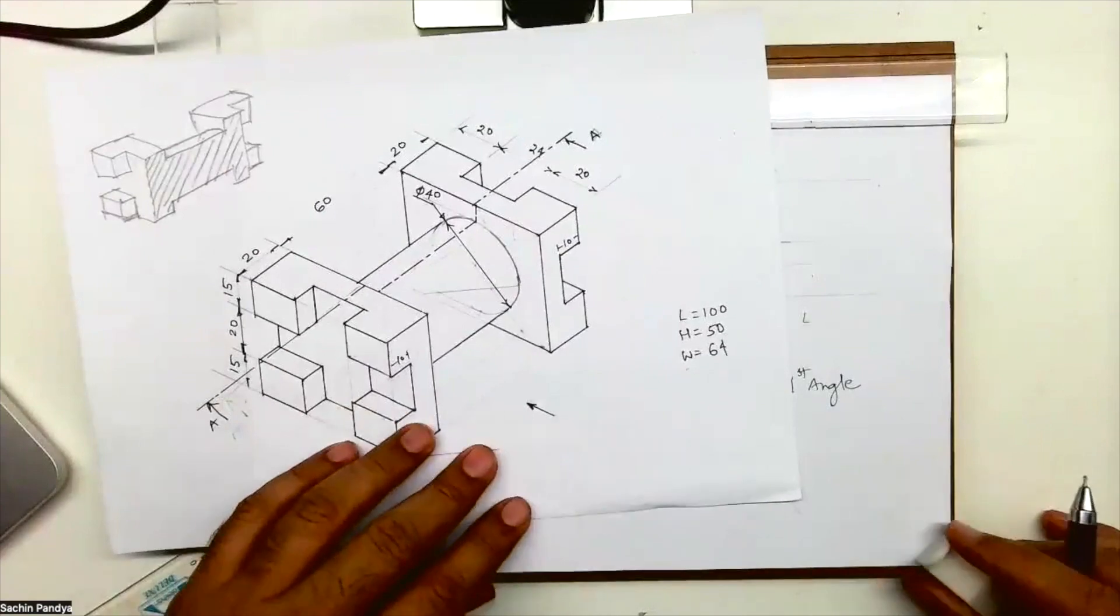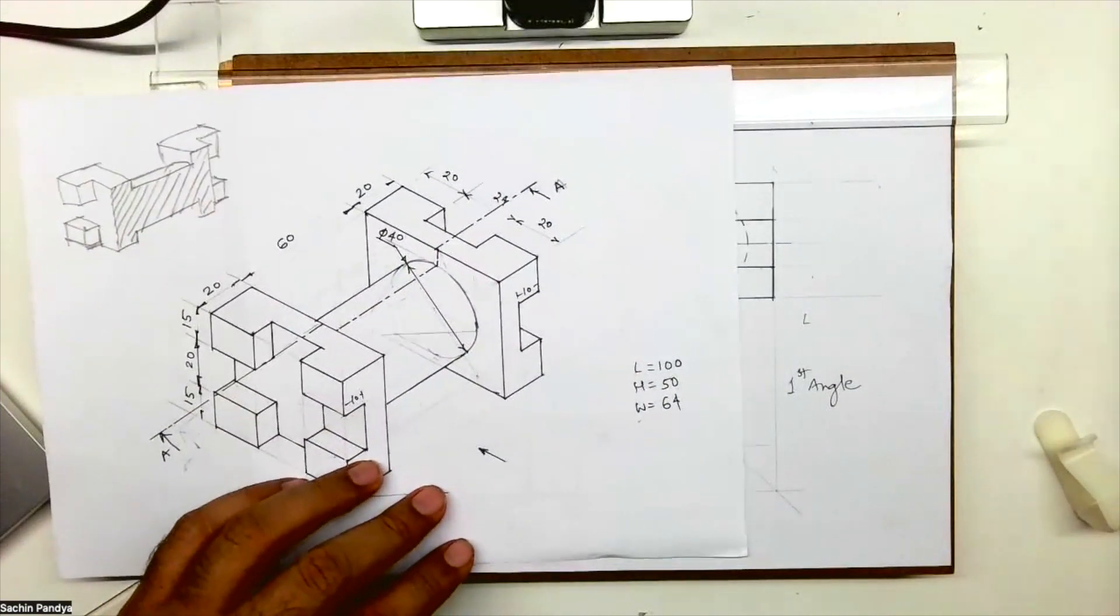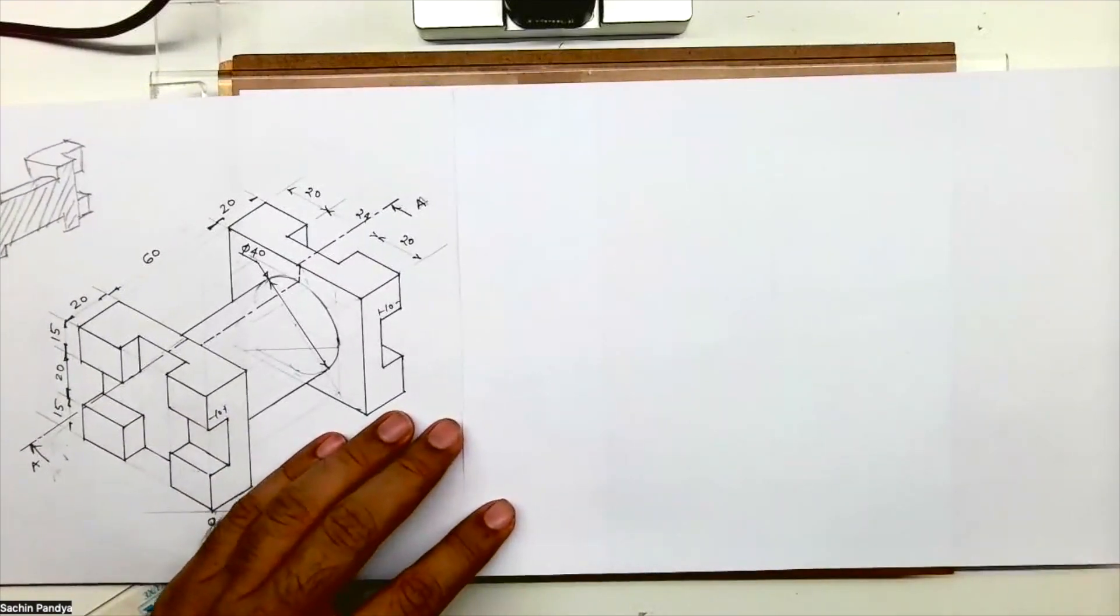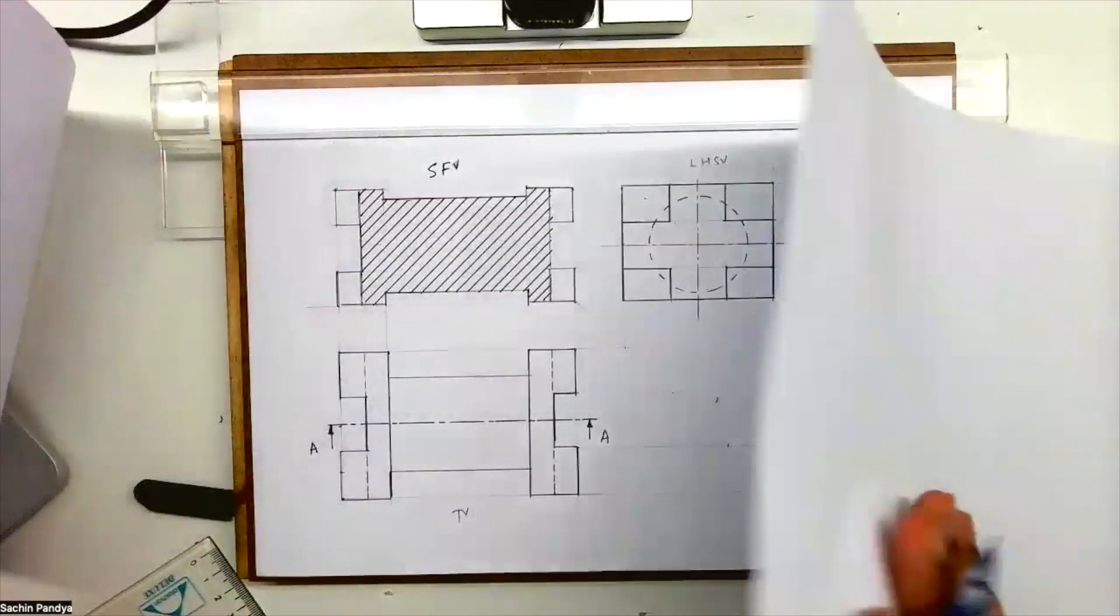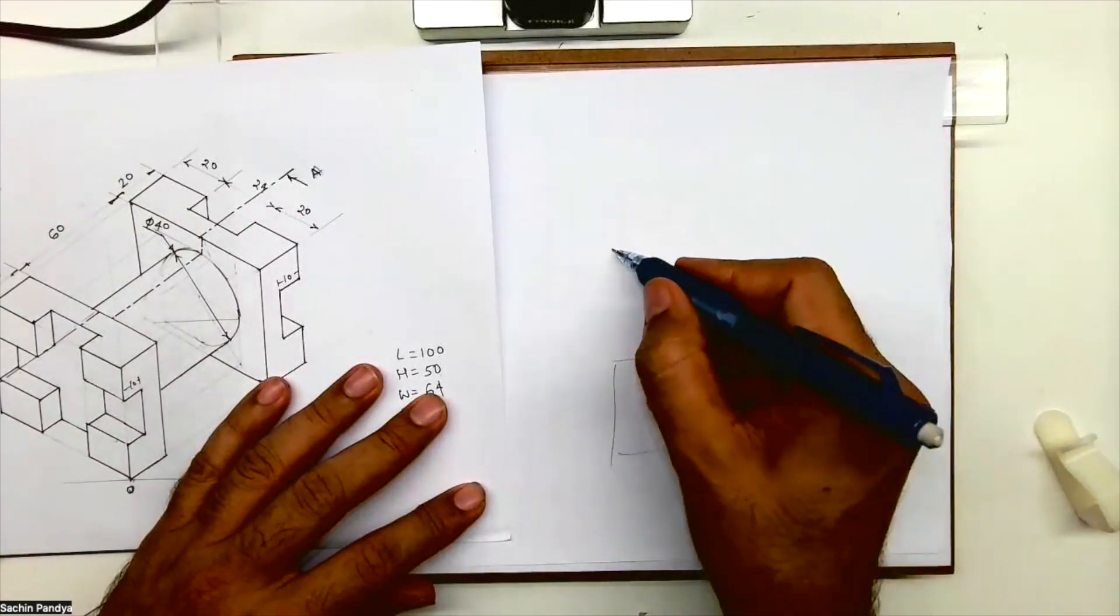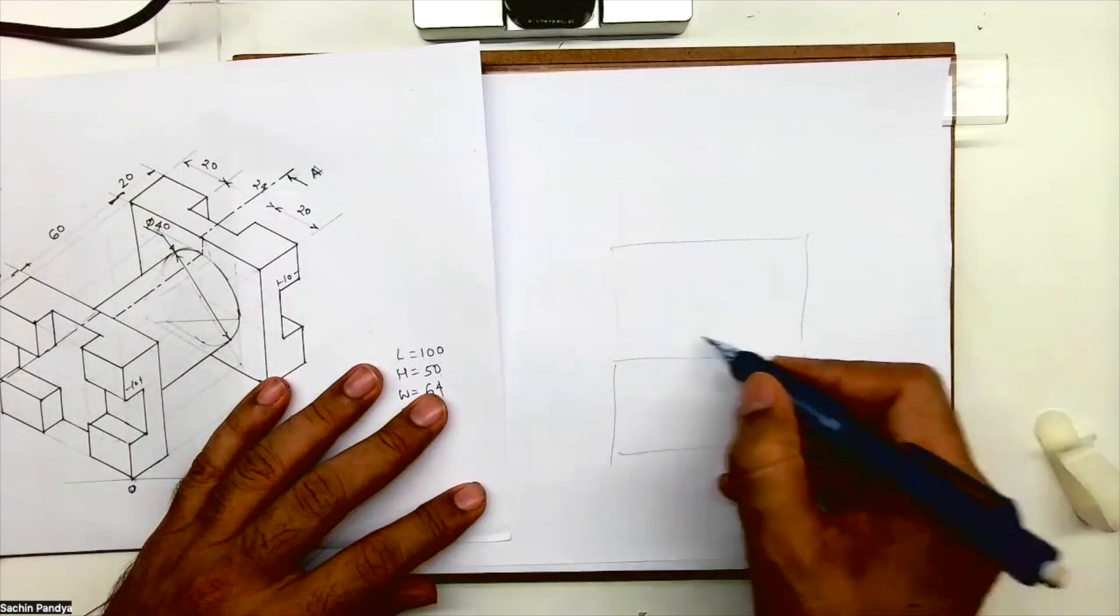Now one small doubt - the same student has asked me to do this in third angle. So I will be drawing it all over again, but I'm explaining to you. Front view will come down, top view will come here.